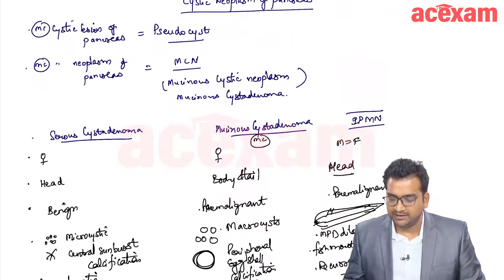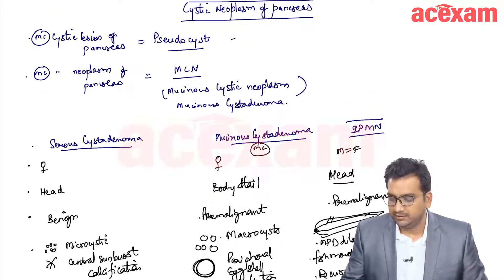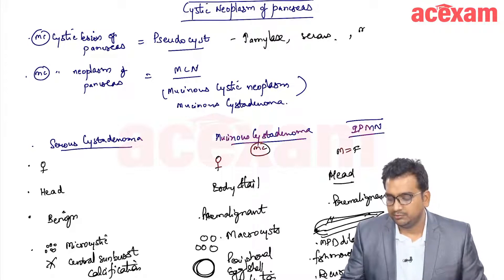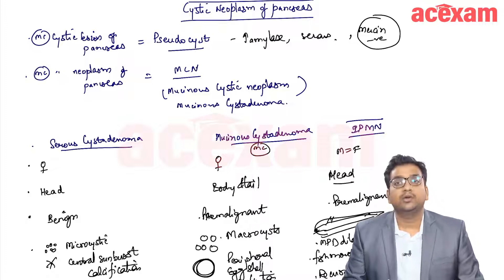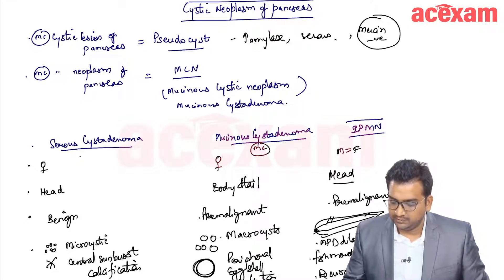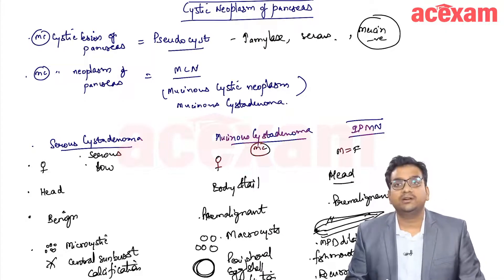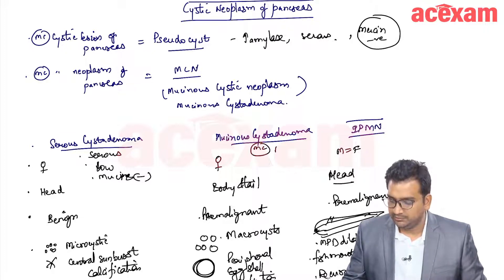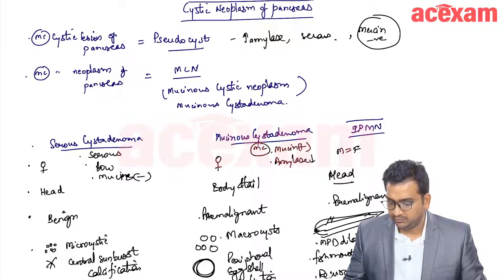On aspiration of cyst fluid: in pseudocyst there will be raised amylase, the fluid will be serous or clear, and mucin will be negative. In serous cyst adenoma the fluid will be serous, amylase will be low because it is not connected to the duct, and mucin will be absent. In mucinous cyst adenoma, mucin will be present, amylase will be low, and CEA in the fluid will be high.